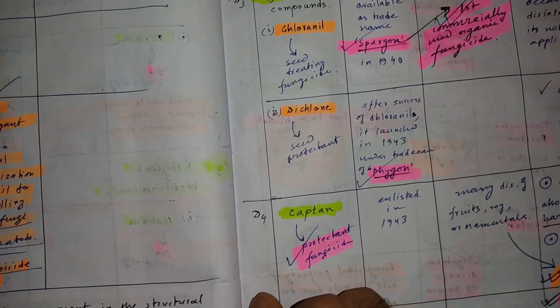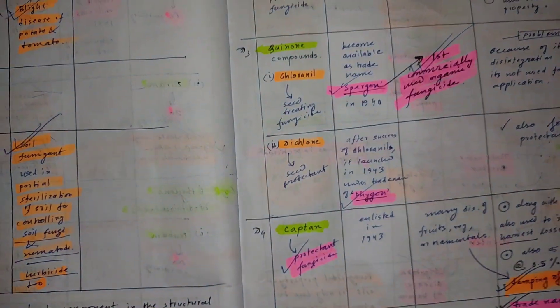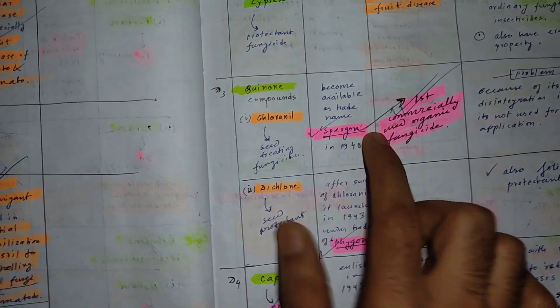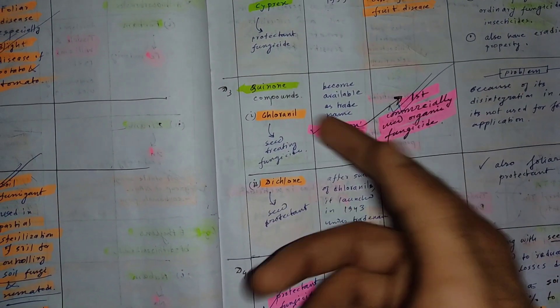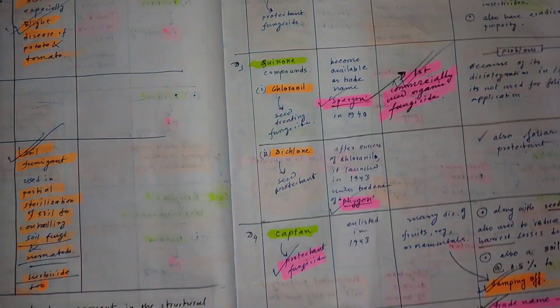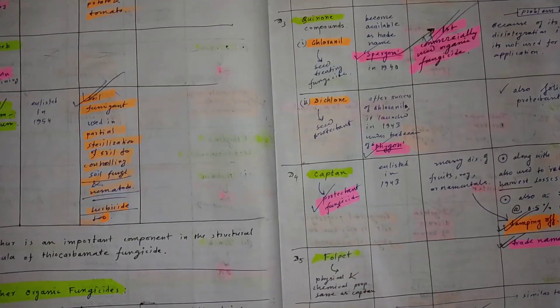So you can make your own story in your own language. This is the trick how to remember all these names. Spargon and Phygon also can be remembered easily by tricks. That's it. See you next. Keep subscribed.